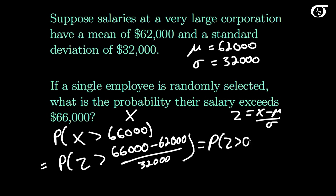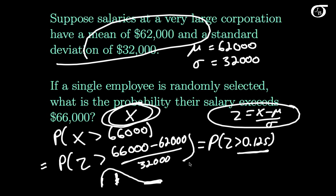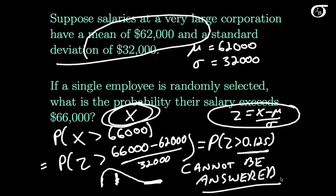Now we haven't done anything mathematically wrong, but if we look this up in a standard normal table or compute an area under the standard normal curve, that would be wrong. Because X does not have a normal distribution — nowhere in this question does it say salaries are normally distributed. In fact, in the real world, salaries have a real bit of right skewness, with many people near the median and a few high earners making a lot of money. So X is definitely not normally distributed, which means Z is definitely not normally distributed. This question simply cannot be answered with the given information — we need to know the actual distribution before we can answer it.